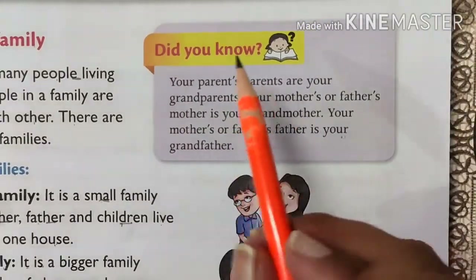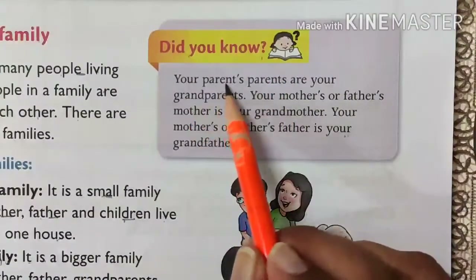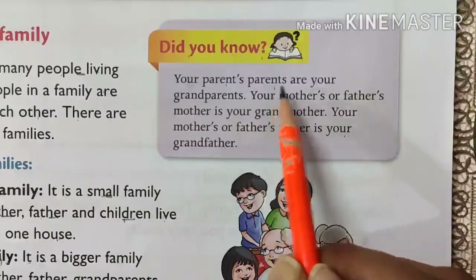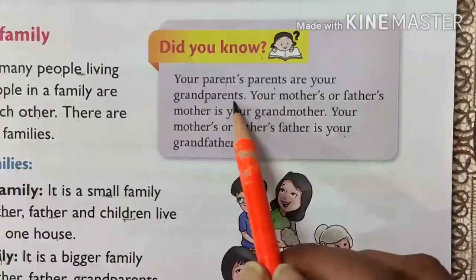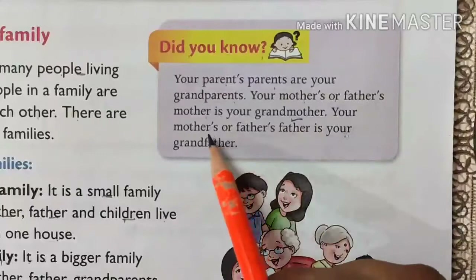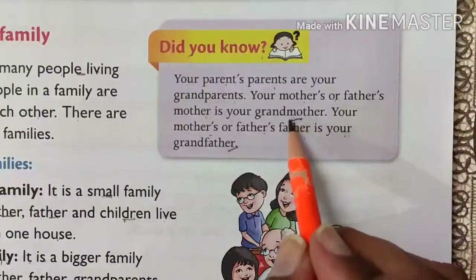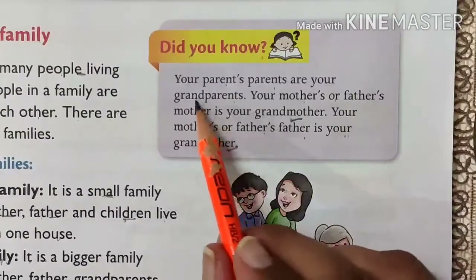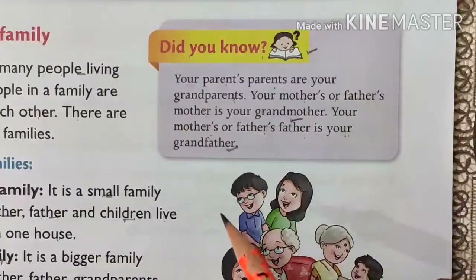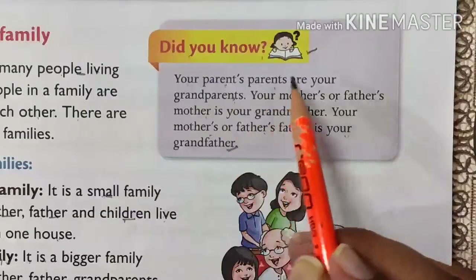See here — Did you know? Kya aap jaante ho? Your parents — aapke jo parents hain, father and mother — unke parents aapke kya hote hain? Grandparents. Your mother's and father's mother is your grandmother. Mother's and father's father is your grandfather. Inhe aap grandparents bolte ho. Aapko yeh dhyan mein rakhna hai — your parents' parents are your grandparents.